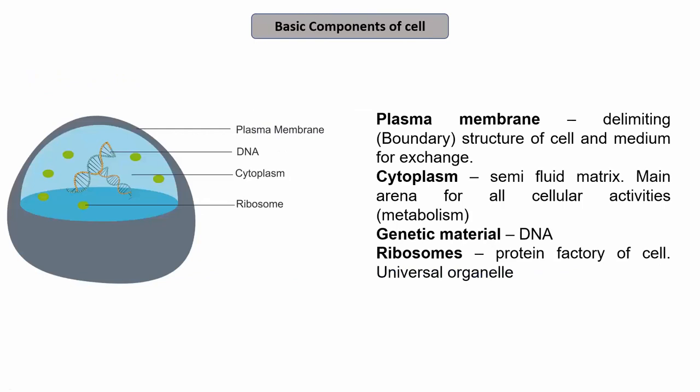What are the basic components of cells? A cell is defined by a boundary — we cannot define a single entity unless it is surrounded by a boundary. A cell is distinguished from its surroundings by a boundary called the plasma membrane. The plasma membrane is the delimiting boundary structure of any cell and provides the medium for exchange of substances in and out of the cell.